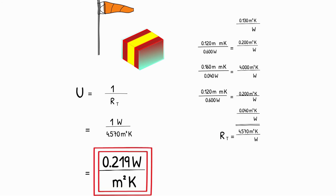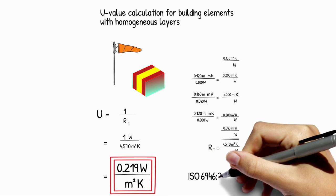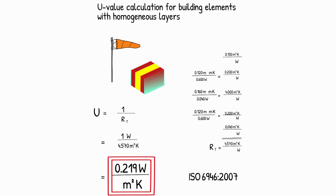And this is how to do U-value calculations for building elements with homogeneous layers in accordance with ISO 6946. In another video, I'll talk more about thermal conductivity, thermal resistance, and surface resistance. Thanks for watching.